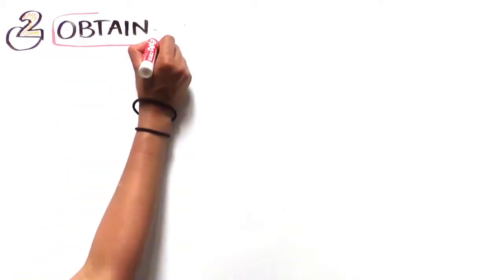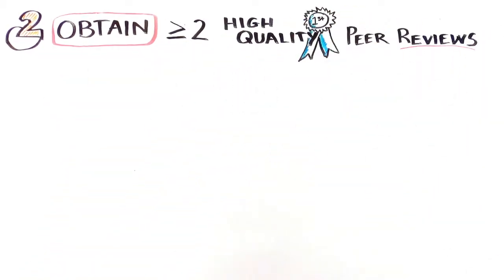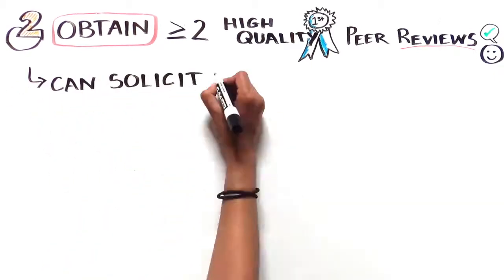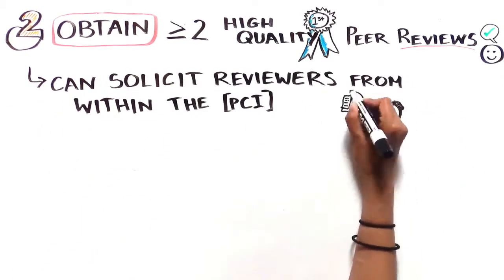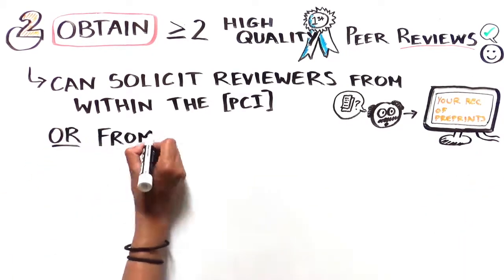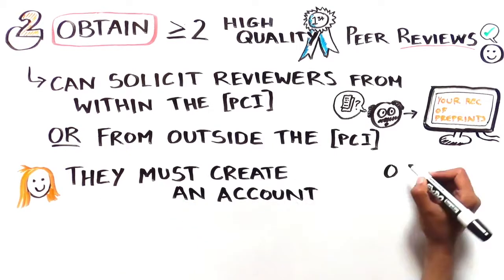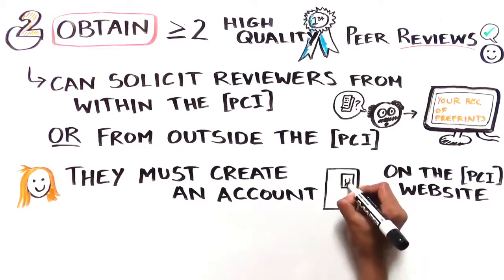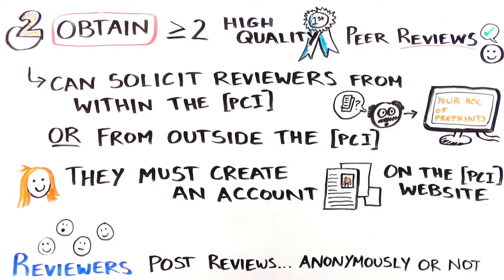Step 2: Obtain at least two high-quality peer reviews. You can solicit reviewers directly from the PCI through your PCI webpage entitled "Your Recommendation of Preprints". You can also solicit reviewers from outside the PCI — they will have to create an account on the PCI website. The reviewers post their reviews, which can be anonymous or not, onto the website.